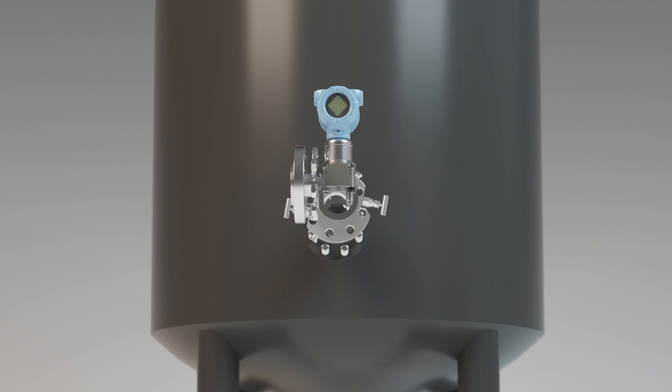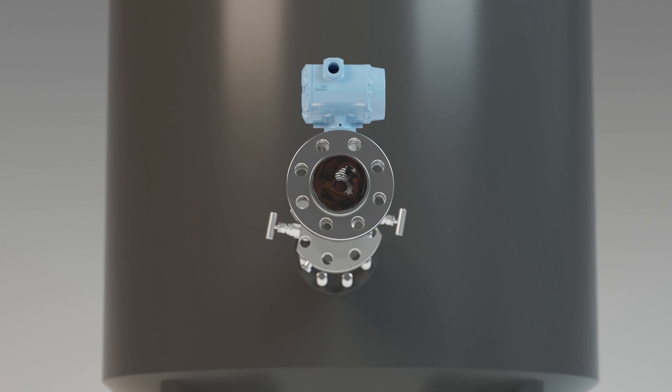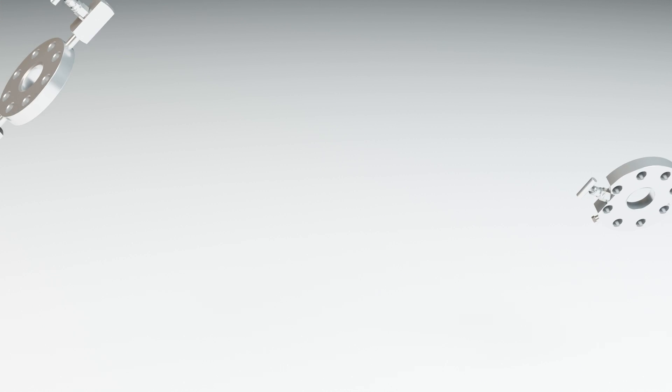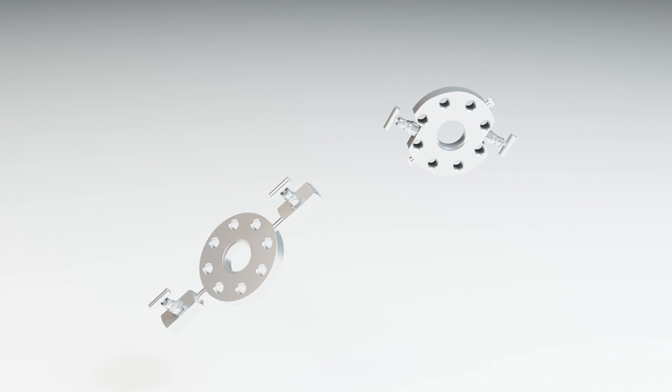Residue buildup on diaphragm seals can create false pressure readings. To remove that residue, Emerson offers two Rosemount 319 flushing ring designs.